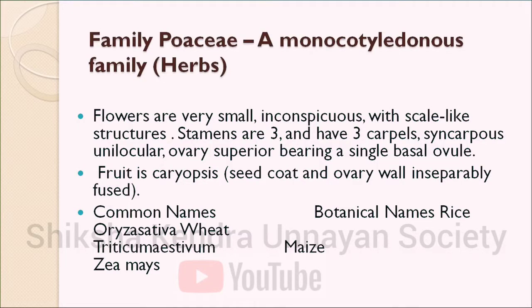The next family is Poaceae — a monocotyledonous family. Plants are herbs or rarely woody (as in sugarcane). Inflorescence is a spike of spikelets (e.g., wheat); a small spikelet may contain not more than five flowers. Flowers are very small and inconspicuous with scale-like structures. Stamens are three, sometimes six (as in rice and bamboo). Three carpels are present; the ovary is syncarpous, unilocular, superior, bearing a single basal ovule. Fruit is a caryopsis — the seed coat and ovary wall are inseparably fused. Examples: rice, wheat, maize, sugarcane, barley. Thank you.